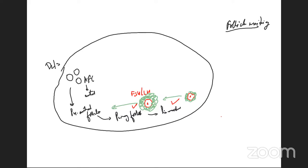When it becomes a pre-antral follicle, it is very important to understand that it is now going to be dependent on FSH and LH. Pre-antral follicles are the ones dependent on FSH and LH — never forget that. The reason we are talking about this is that you will understand everything in a very short span of time once I correlate this with stimulation.